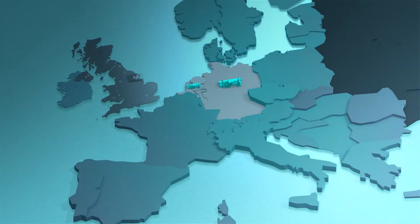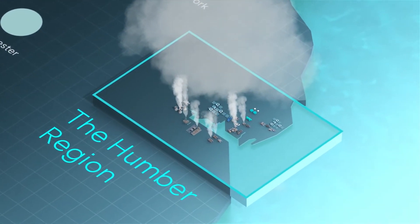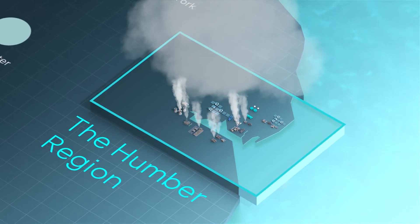In the UK, Equinor and its partners are creating the world's first net zero industrial hub in the Humber region on the northeastern coast of England.